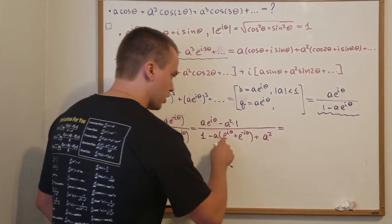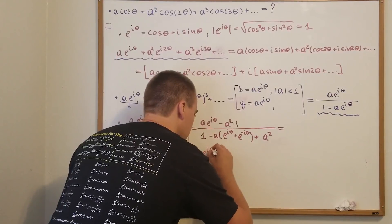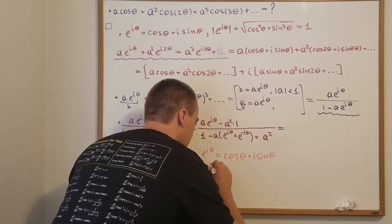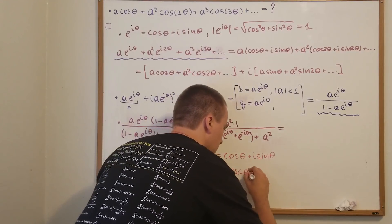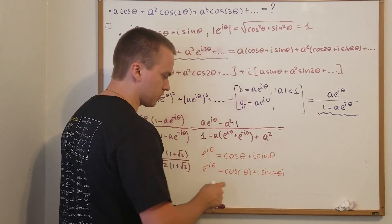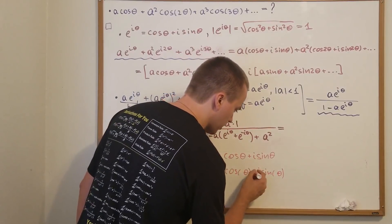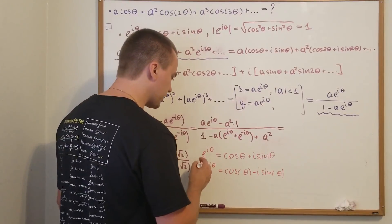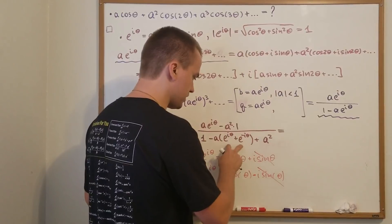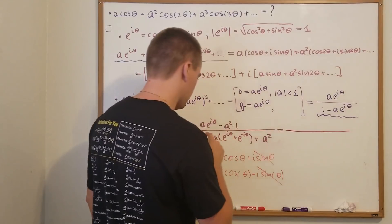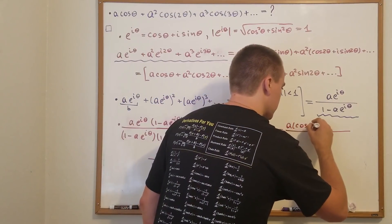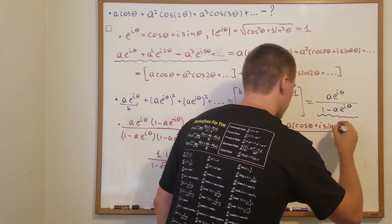We need to recall that e^(iθ) + e^(−iθ) equals 2 cos θ. We know e^(iθ) = cos θ + i sin θ and e^(−iθ) = cos(−θ) + i sin(−θ). Since cosine is even, cos(−θ) = cos θ, and since sine is odd, sin(−θ) = −sin θ. Adding them, the sine terms cancel and we get 2 cos θ. Now rewriting the numerator: A·(cos θ + i sin θ) minus A².